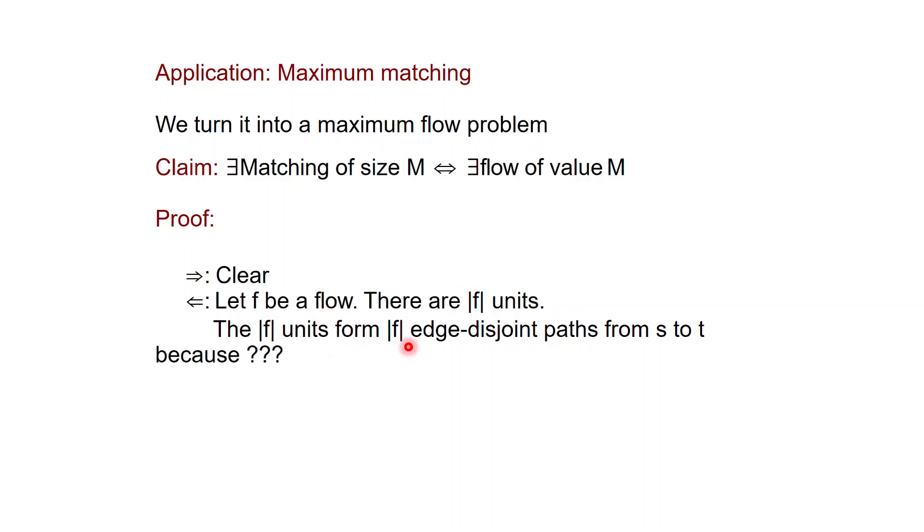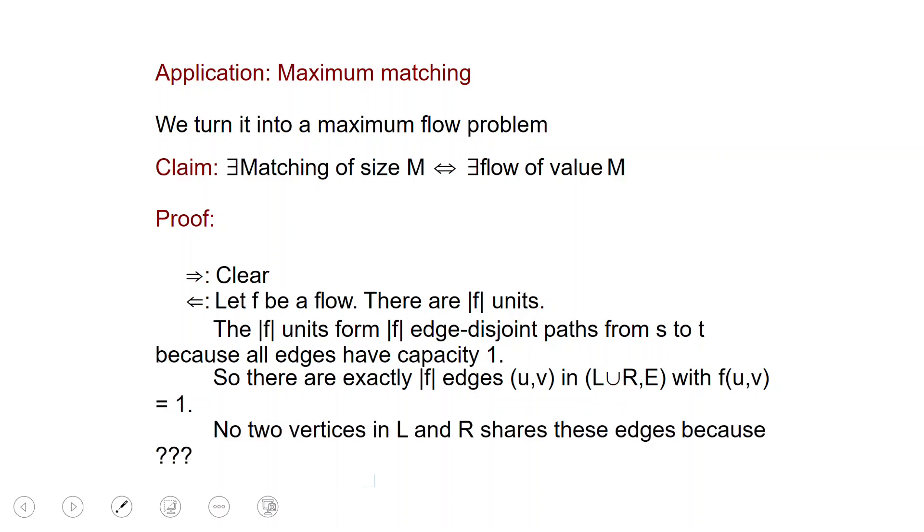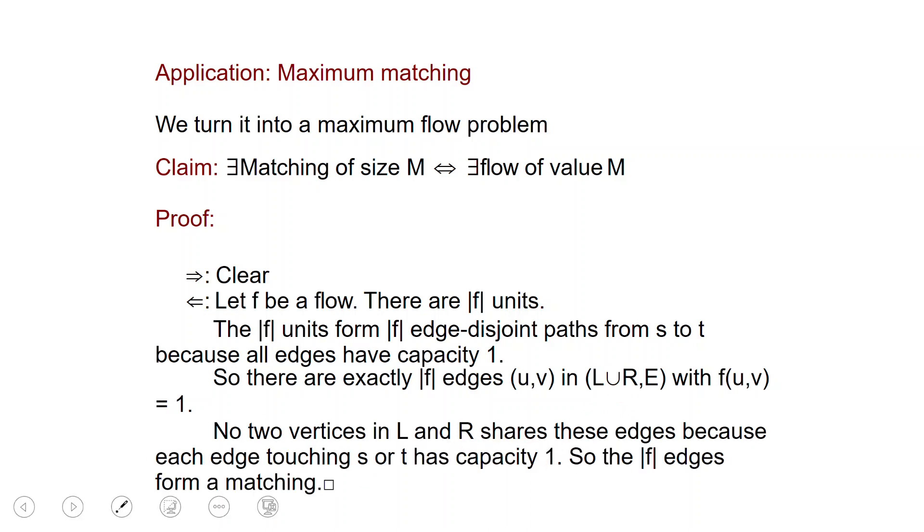And these M units will give you edge disjoint paths from S to T. That's because all edges have capacity 1. So there are going to be exactly M edges UV in the graph, which have value of the flow 1. In the graph, I mean in the original graph, so going from L to R. And now we can verify that no two vertices in L and R share any of these edges, because the edges touching S or T have capacity 1. So the edges with the value of 1 in the flow must form a matching.